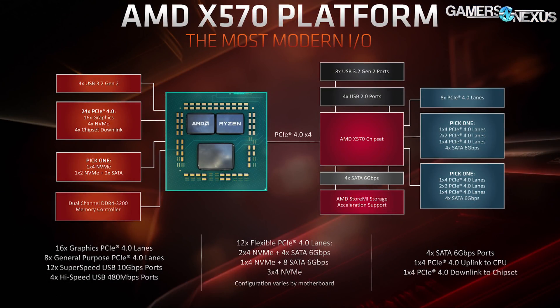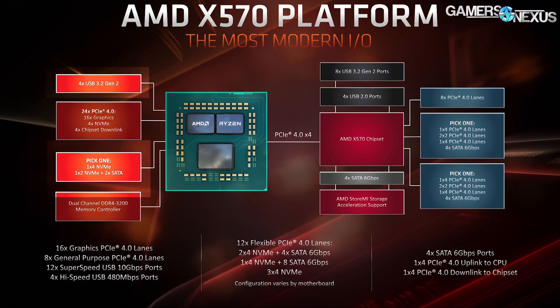Getting into the specs: the Ryzen 3000 CPUs have 24 total PCIe lanes. Four of those are general purpose or NVMe SSD lanes, giving you four-by Gen 4 straight to the CPU for SSDs, with 16 used for PCIe graphics lanes. The remaining four lanes go straight to the chipset, allowing more bandwidth for chipset-to-CPU transactions. The CPU further supports four USB 3.2 Gen 2 connections and a pick-one choice of either 1x4 NVMe or 1x2 NVMe with two extra SATA ports.